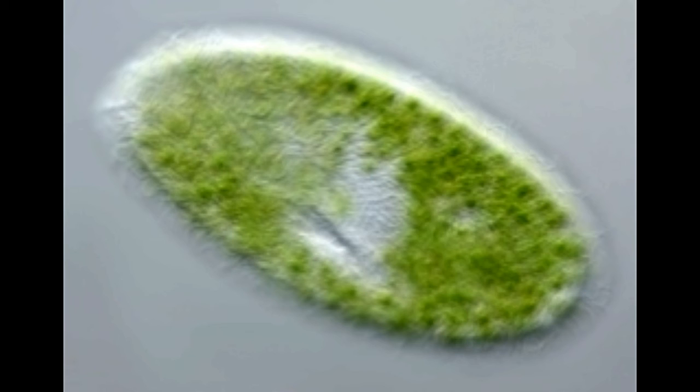Paramecium is capable of both sexual and asexual reproduction types. Locomotion in paramecium: The whole body of this protozoan is covered with fine protoplasmic cilia, which are arranged in definite longitudinal rows. These structures serve as its locomotive organs.